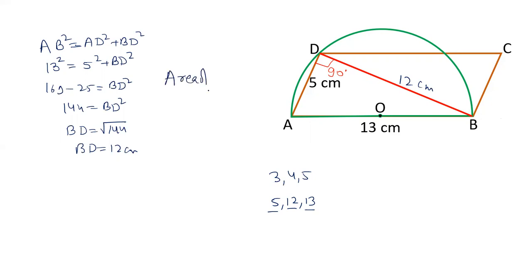Area of triangle ABD will be equal to half base into height. Here the base is AD, height is BD. AD is 5 centimeters, BD is 12 centimeters. So the area of triangle is 30 centimeters square. Area of ABD is 30 centimeters square.